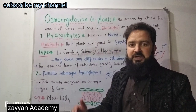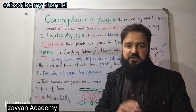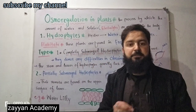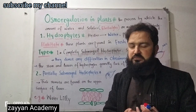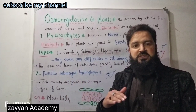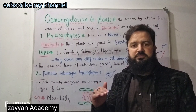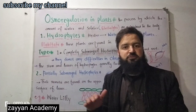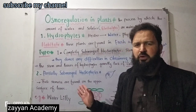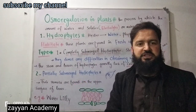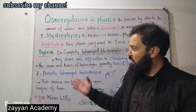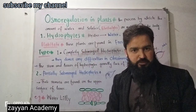Hydrophytes are of two types: completely submerged hydrophytes and partially submerged hydrophytes. Completely submerged hydrophytes have their stem, leaves, and roots underwater. Partially submerged hydrophytes have only half of their stem and roots submerged. These are the two types of hydrophytes and their characteristics.